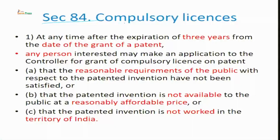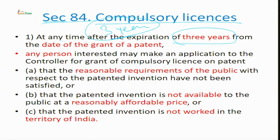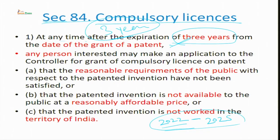Section 84 is specifically related with compulsory licensing. It says: at any time after the expiration of 3 years. The most important thing is there must be a 3-year expiry of time when a patentee gets his license. For example, if the patentee gets his patent in 2022, no one can take compulsory licensing before 2025, when the 3 years have passed. Before 3 years, no one can apply for compulsory licensing. Three years is mandatory — an essential for providing compulsory licensing.